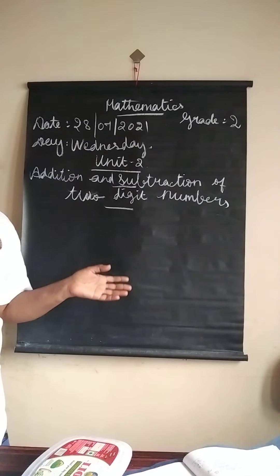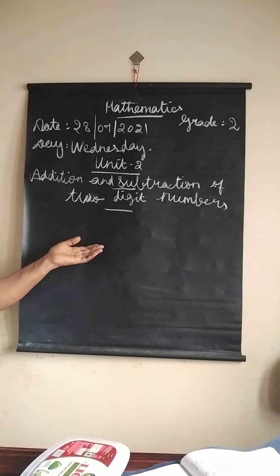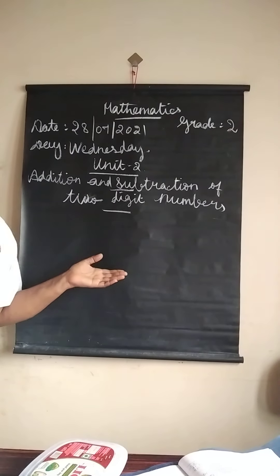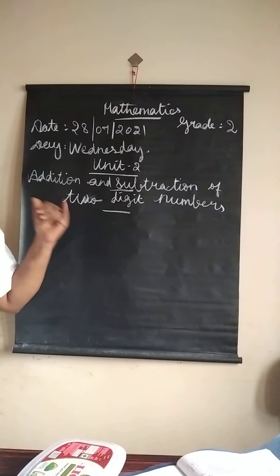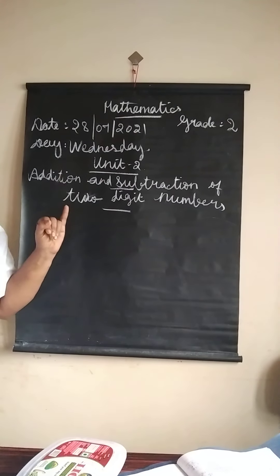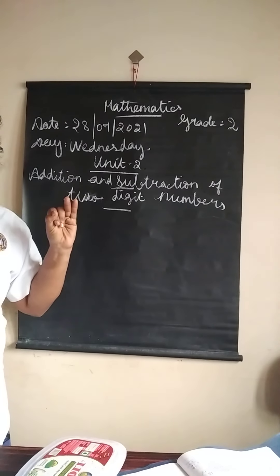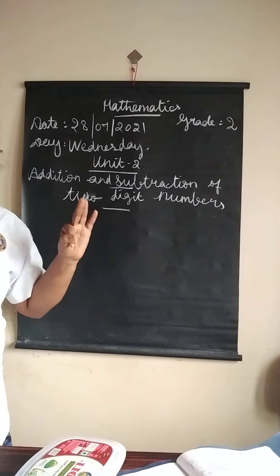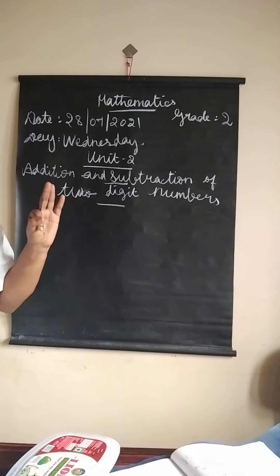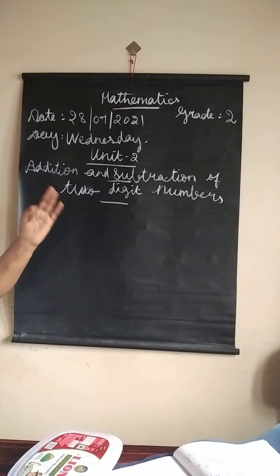Now we are studying unit 2 — addition and subtraction of 2-digit numbers. Did you finish the fill-ups? Complete the table. Add the following. You all completed?